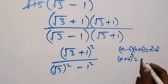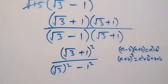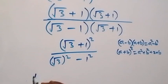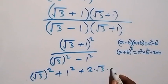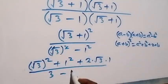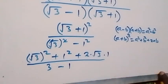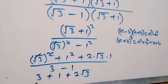In the numerator, (a plus b) squared equals a squared plus 2ab plus b squared. Applying that: we have root 3 squared plus 1 squared plus 2 times root 3 times 1. The square cancels the square root, giving 3 plus 1 plus 2 root 3, over 3 minus 1, which is 2.